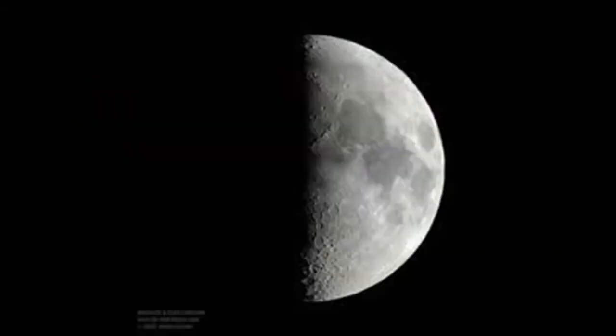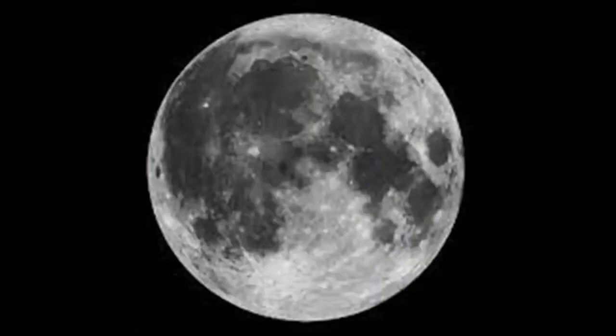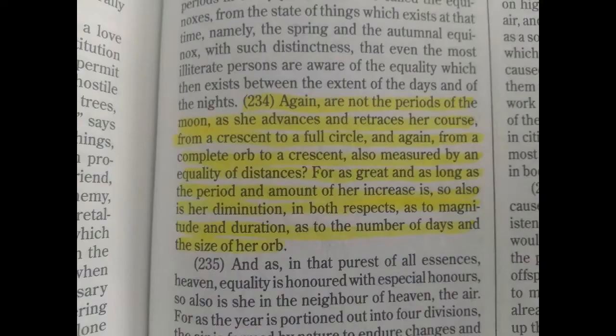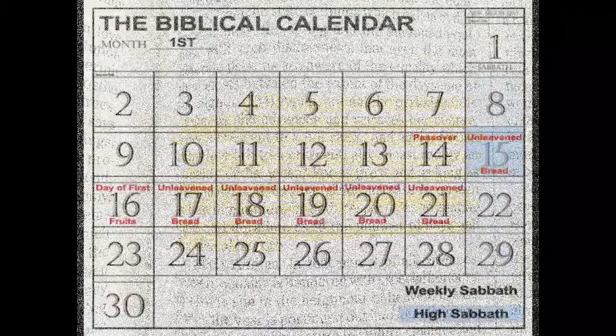This is Philo again, The Special Laws Part 4, paragraph 234: 'And again, are not the periods of the moon, as she advances and retraces her course, from a crescent to a full circle and again from a complete orb to a crescent, all measured by an equality of distances?'